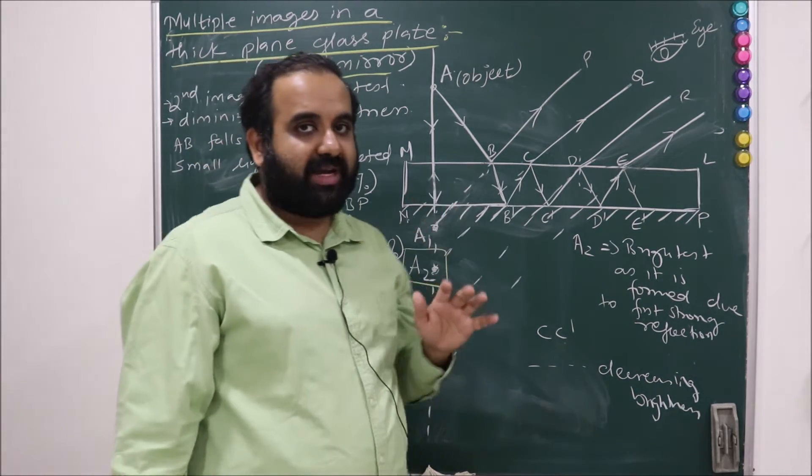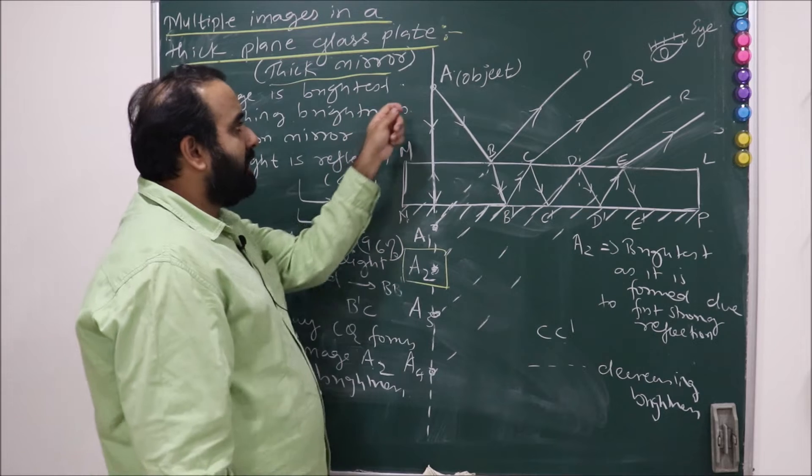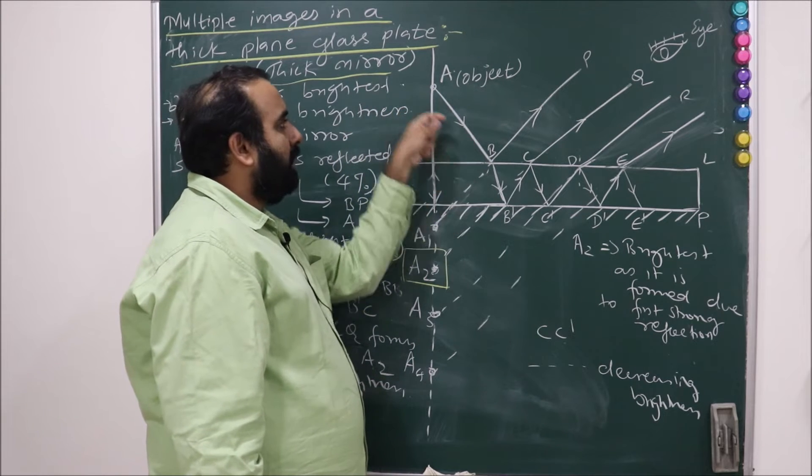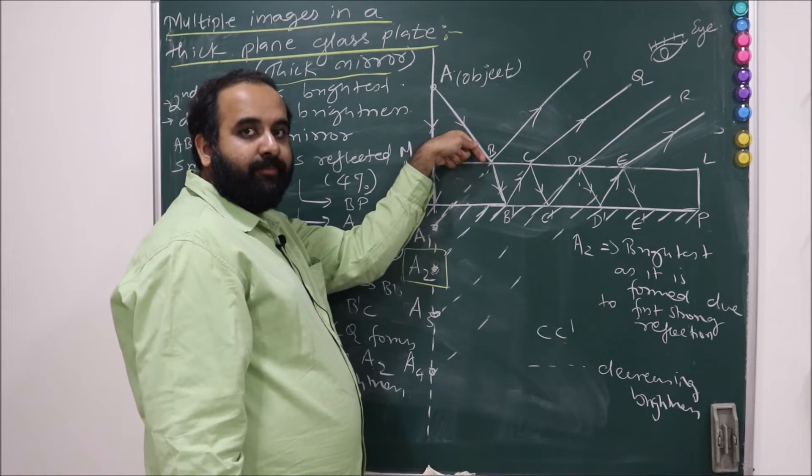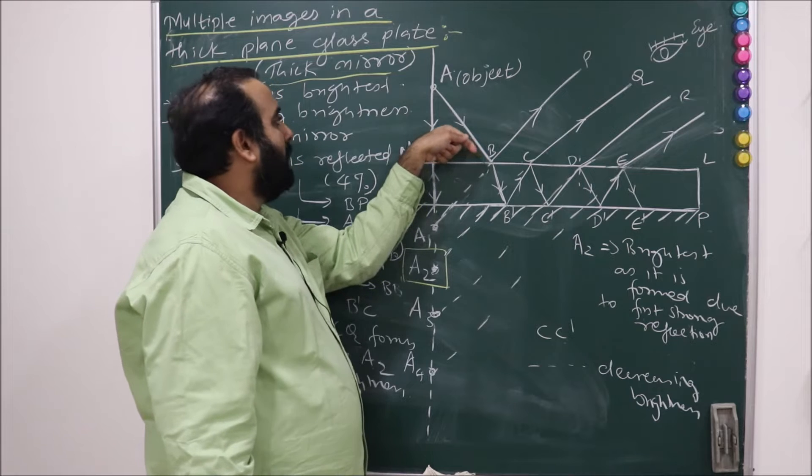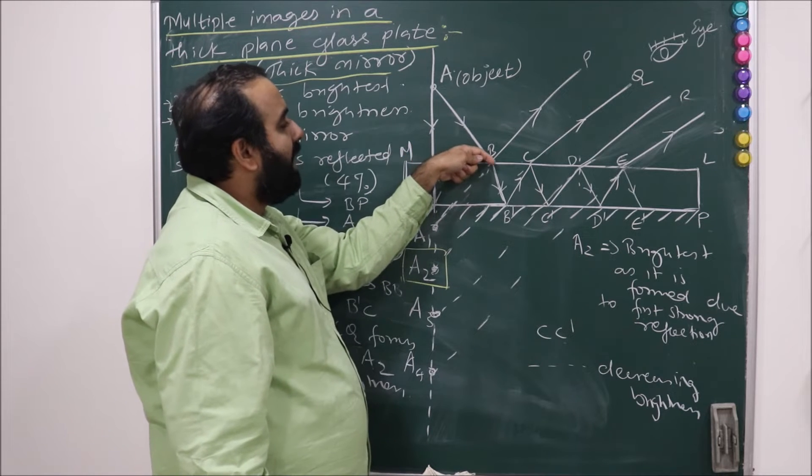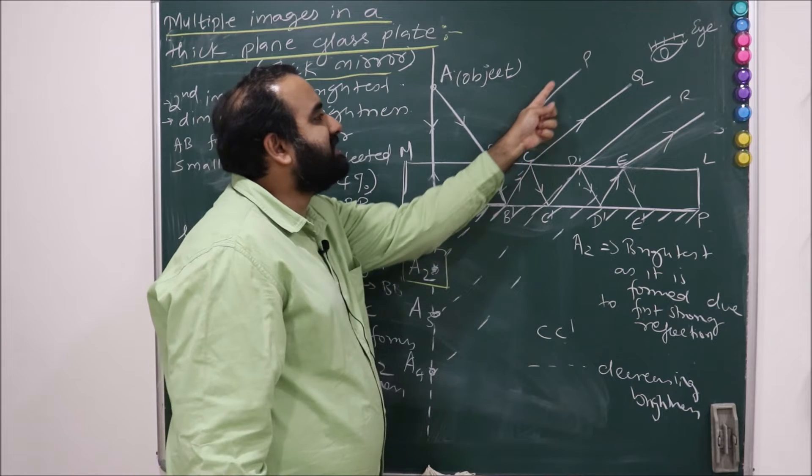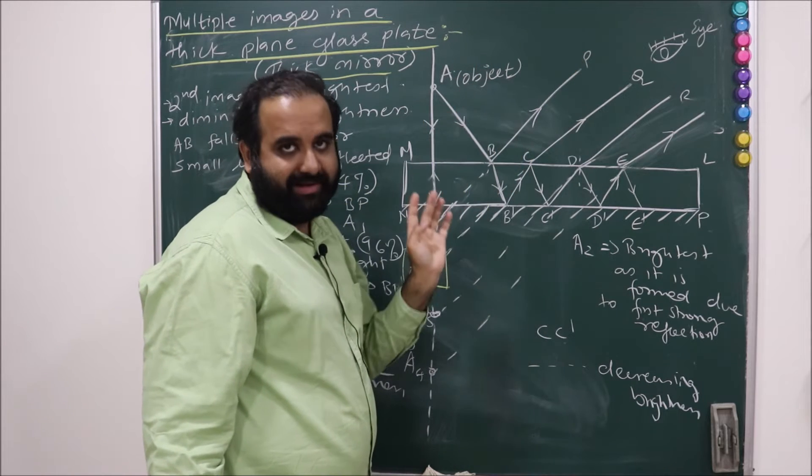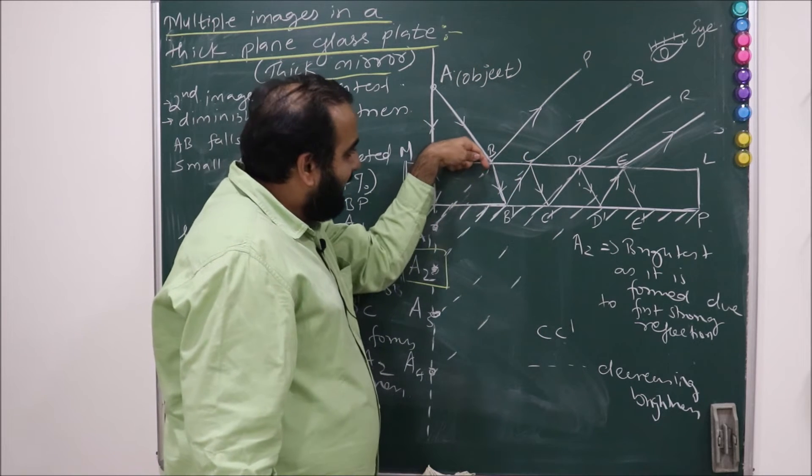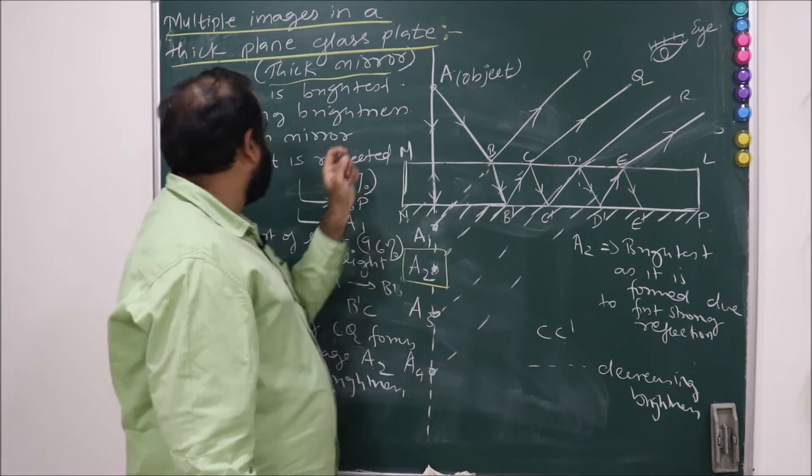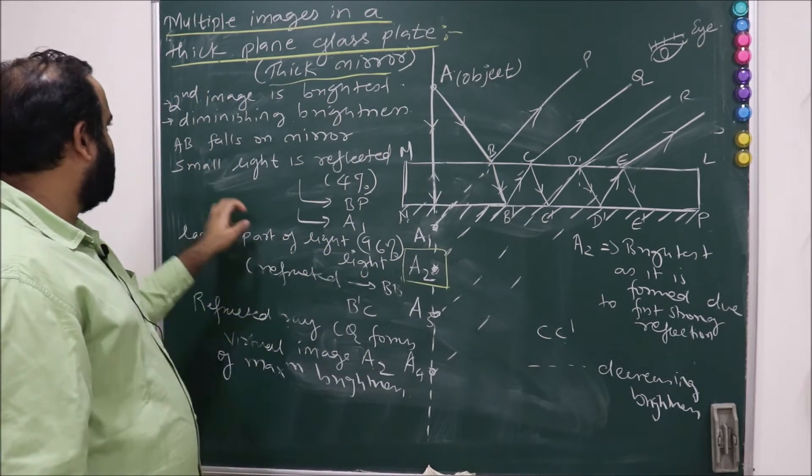Why does it form? Let's understand the discussion now. See, this light ray AB falls obliquely on this particular point B. Now as it points at B, what is going to happen is only 4% of light gets reflected and 96% of the light gets refracted.